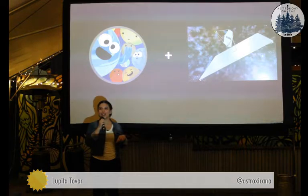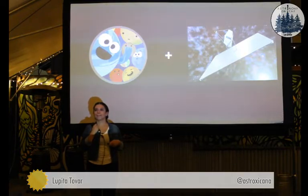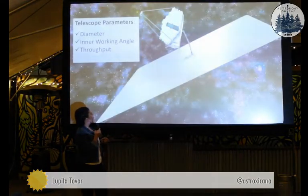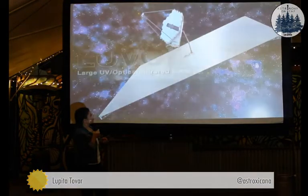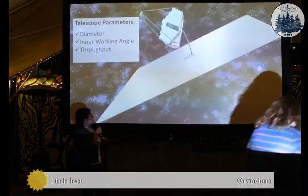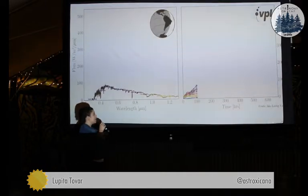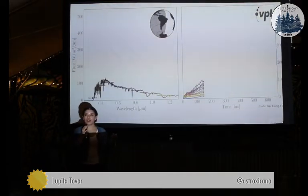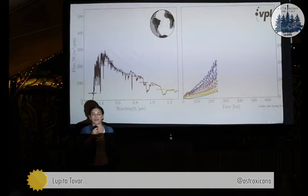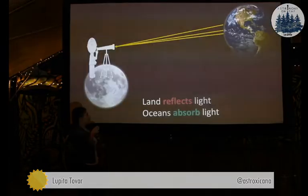Why is the spectra only in the visible range and not encompassing the full range? For right now, we're only testing in the optical. We can run the model out to other wavelengths — and LUVOIR will cover the full range of spectra, as the name suggests.